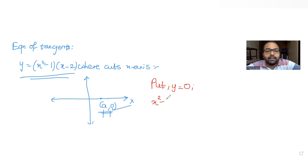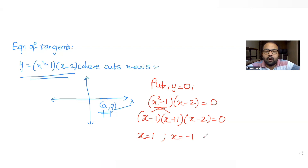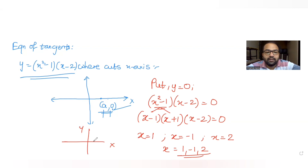Putting y as 0, we get x squared minus 1 into x minus 2 equals 0. Expanding using the identity a squared minus b squared equals a plus b into a minus b, we get x minus 1 into x plus 1 into x minus 2 equals 0. This gives three values: x equals 1, x equals minus 1, and x equals 2. So the three intersection points are 1 comma 0, 2 comma 0, and minus 1 comma 0.